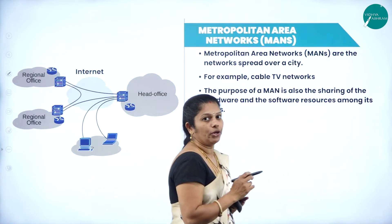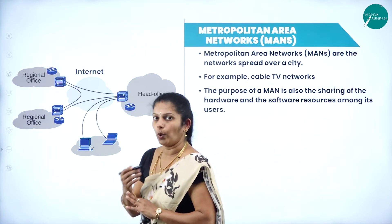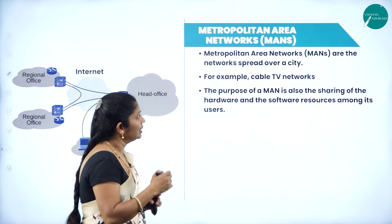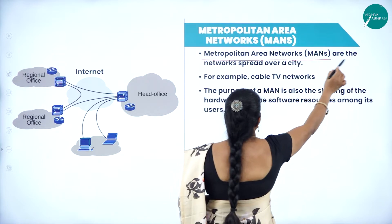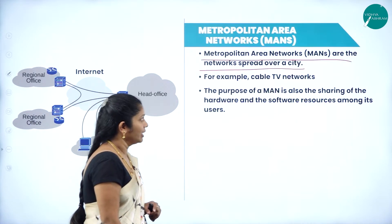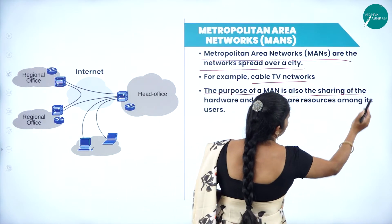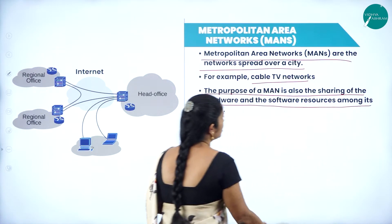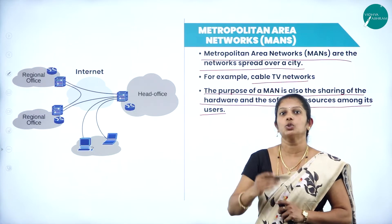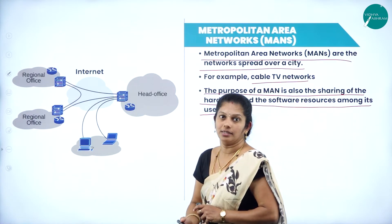Next, Metropolitan Area Network. This network is in between LAN and WAN — it covers neither just a small area like LAN nor as large as WAN. Metropolitan area networks spread over a city, from one city to another city. For example, cable TV networks are an example of MAN. Data can be transferred from one city to another place, covering a larger area but not more than a few kilometers.